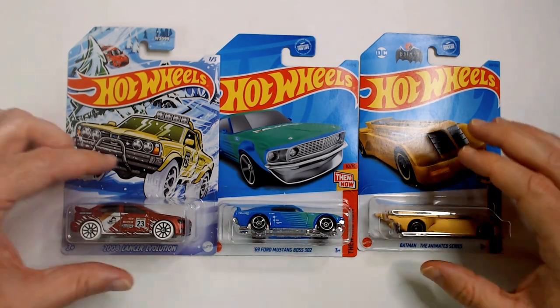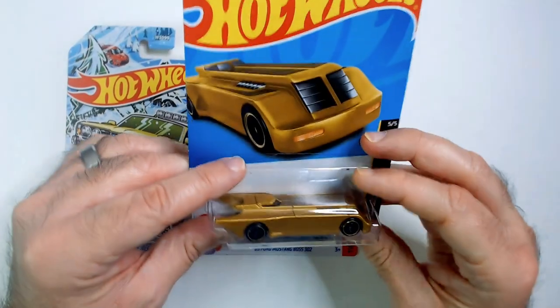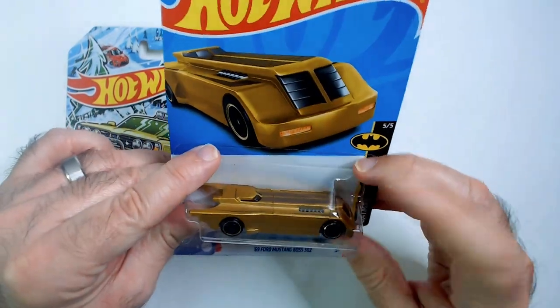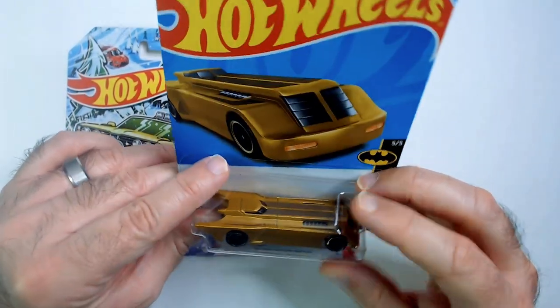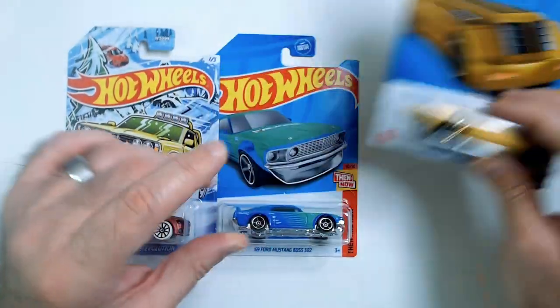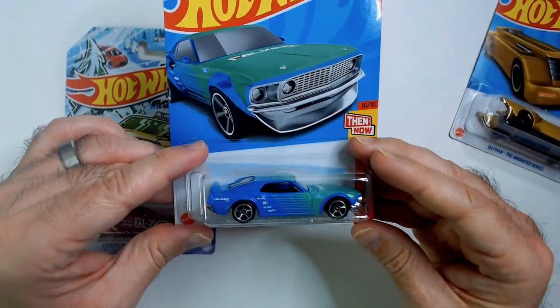Welcome back to another unboxing. I've got a couple Hot Wheels here. I've got this in a couple versions. I didn't think I had the gold or the purple, and I think the black version. So I grabbed the gold Batman, it's a '69 Ford Mustang.